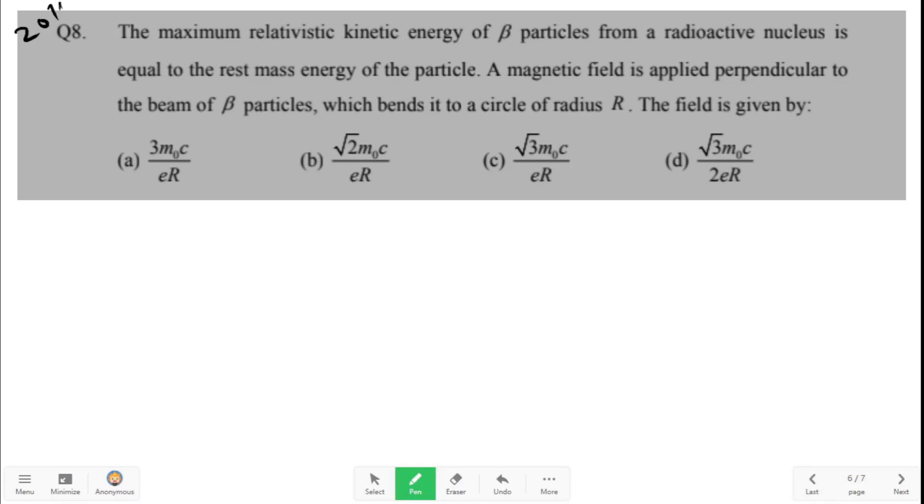This question is from JEE 2016. We did it once but there was a mistake. Thank you Silajit Chakraborty for pointing out the mistake, so let's redo it again. The maximum relativistic kinetic energy of beta particles from a radioactive nucleus is equal to rest mass energy of the particle.